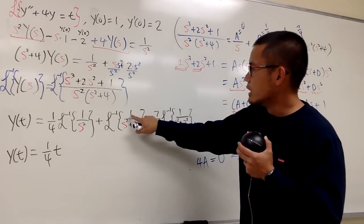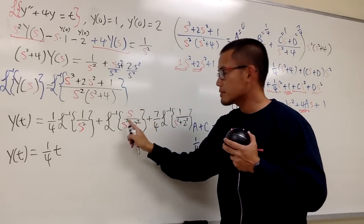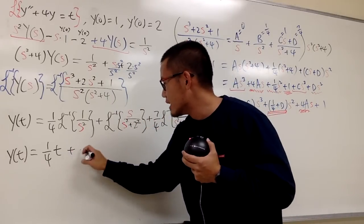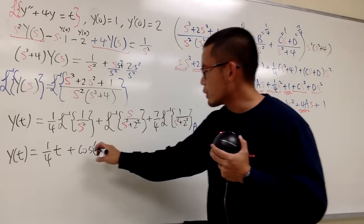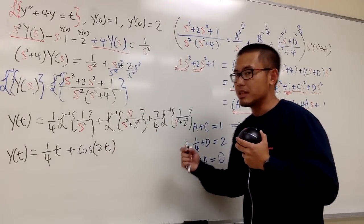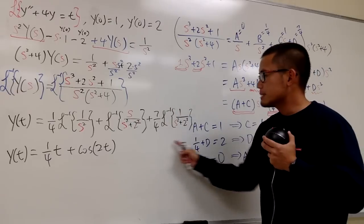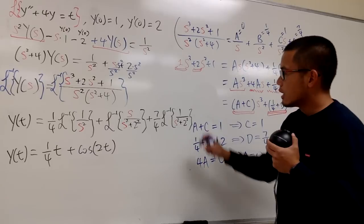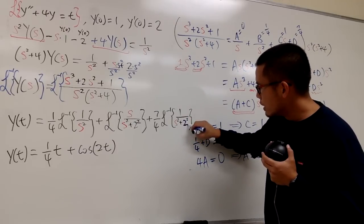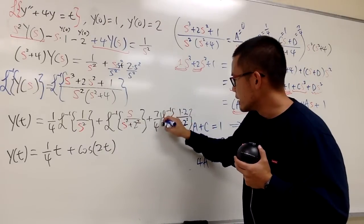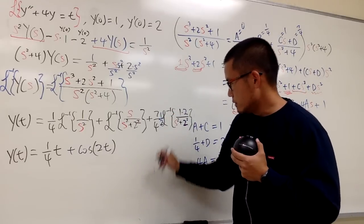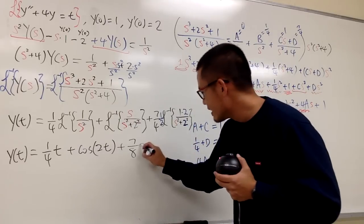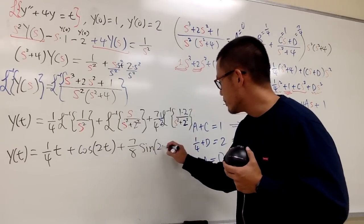Then, for the Cs + D term with C = 1, we have 1 times s over s squared plus 2 squared, which is about cosine — we get plus cosine(2t). The top should have an s because it's 1 times s. For the last part with 7 over 4 in front, we have 1 over s squared plus 2 squared. Since b equals 2, I multiply the 2 on top and divide by 2, giving plus 7 over 8 times sine(2t).